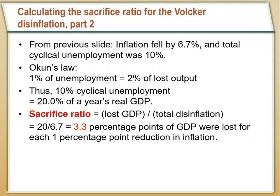A sacrifice ratio of 3.3 was much lower than the five that had previously been estimated. So it wasn't as costly for the US to bring inflation down — we only had to sacrifice 3.3 percentage points of GDP for every percentage point we brought down inflation. It looks like Paul Volcker was fairly effective at getting people to update their inflation expectations. By saying he would do whatever it took and increasing transparency, he got people to update their expectations, so the US didn't have to suffer that full sacrifice ratio.